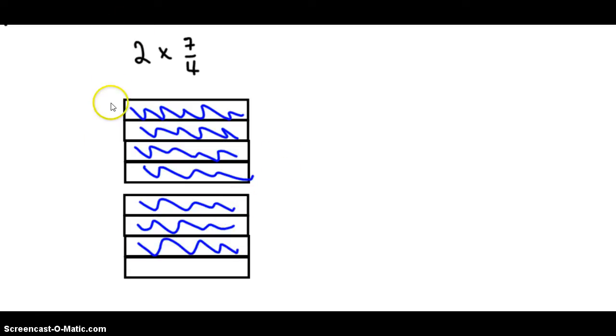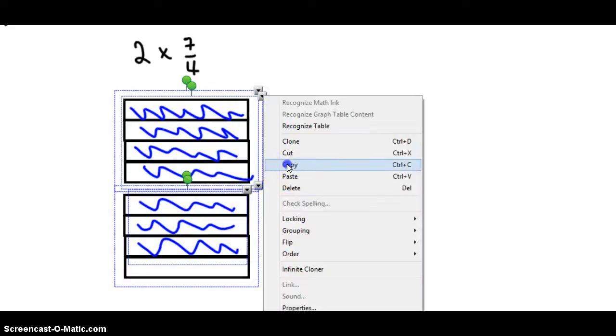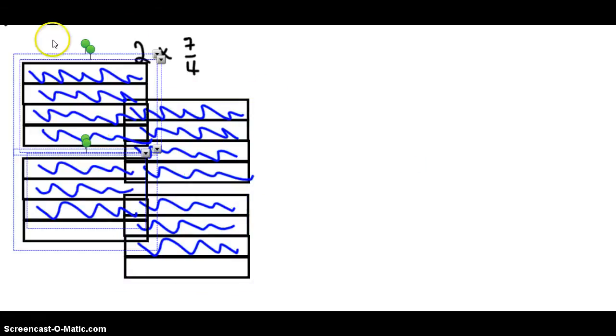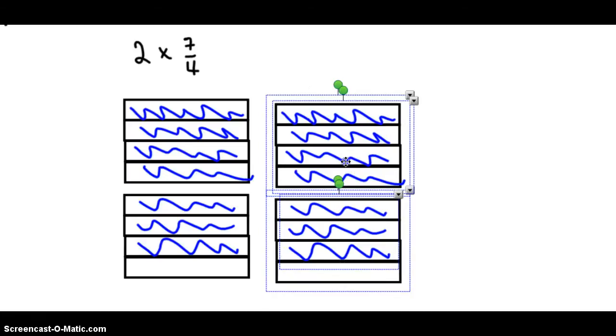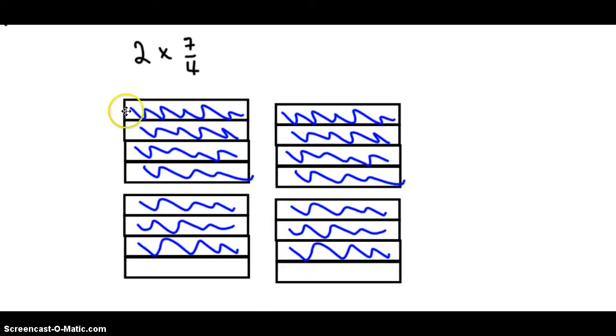I want to get 2 groups of that. So I quickly copy that, paste it. There they are. 2 groups of 7/4. And so now I can see how many quarters I have. I actually have 14 of those quarters. So there it is. I've got the answer. The answer is 14/4. Perfect.